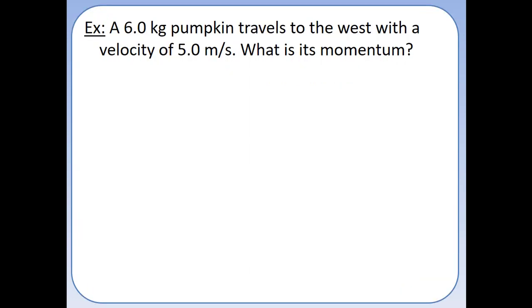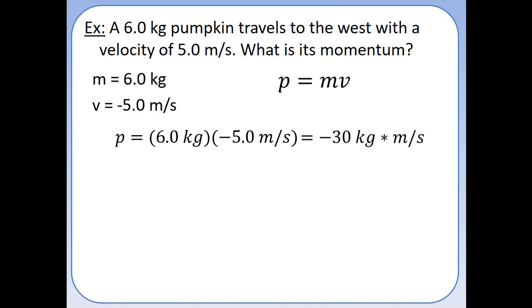Say we have a 6.0 kg pumpkin that travels to the west with a velocity of 5.0 m/s. What is its momentum? We know mass and velocity, and velocity is going west, so it is negative. We take mass times velocity: p = (6.0 kg)(-5.0 m/s) = -30 kg·m/s.